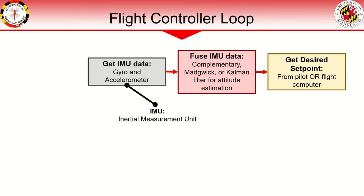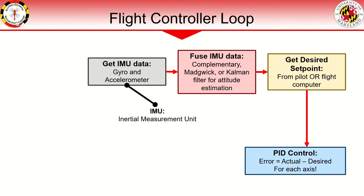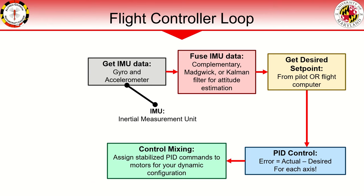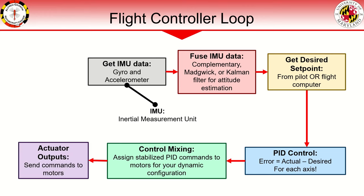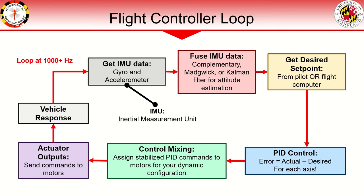Next, the flight controller needs to know the desired vehicle state, or set point, commanded by the pilot or flight computer. This set point is used to compute the error in the drone's current orientation from where it is desired to be. A PID controller is used to generate stabilized signals based on this error. These signals for each vehicle axis of rotation are applied to the drone's motors according to the dynamic configuration in the control mixer. For example, to stabilize pitch, the forward and rear motors must receive opposite stabilized signals. We then write these signals out to the motors, which generates a vehicle response. This response is again measured by the IMU, and we have created a feedback loop.